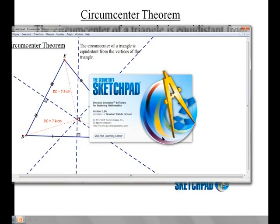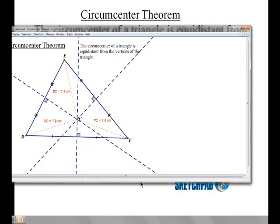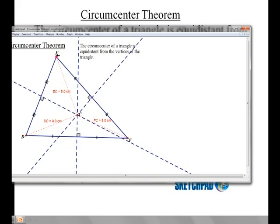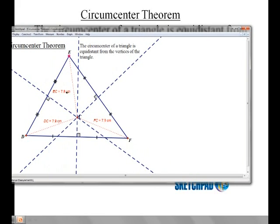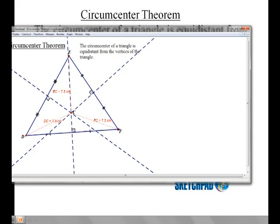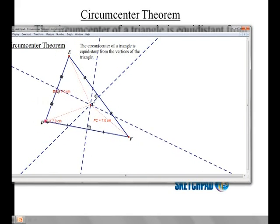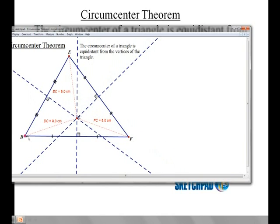This is the circumcenter theorem. It's talking about how the distance from the vertices to the circumcenter is always the same, no matter how you move. And the way this construction is done is these distances are always shown right here, so you can see how they're always the same, no matter how you change the triangle. You can change any point on the triangle and they always stay the same.